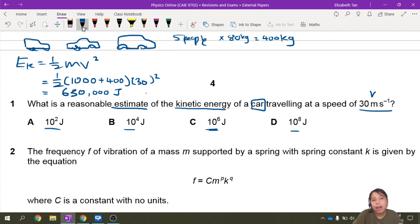The answers they give are kind of in powers. So my value, I would get roughly 0.63 times 10 to the 6 joules. Or if I put it in 10 to the 4, can I change that? 63 times 10 to the 4.